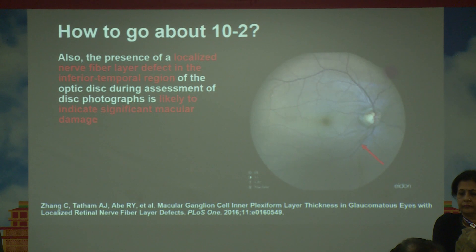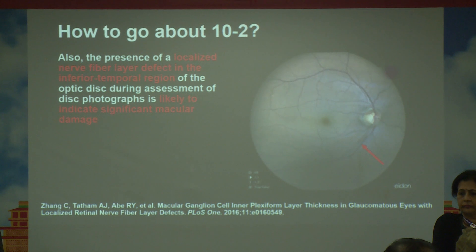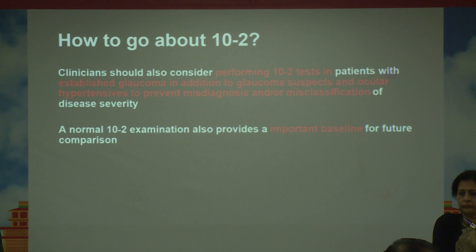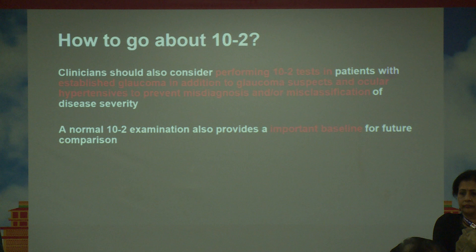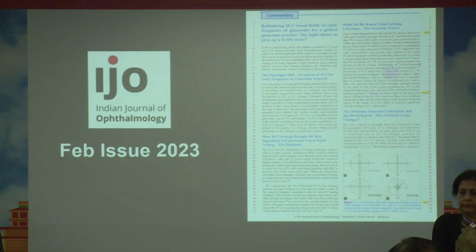If there is an inferior temporal slit defect on fundus examination, a study by Zhang et al. recommends performing 10-2 for these patients, as they are more prone to functional damage in this region. Clinicians should also consider performing 10-2 even in established glaucoma, because the diagnosis and severity can change and misclassification can be avoided. A 10-2 is very important to establish a baseline, just like 24-2, fundus photography, and OCT.